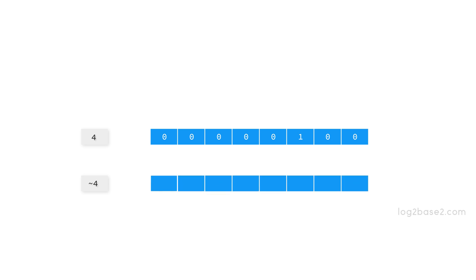Take the first bit — it is zero, so it will become one. Next, take zero, invert it and we get one again. Next is one, it will become zero, and next is zero, it will become one. Similarly, all the remaining zeros will become one, and we get 1 1 1 1 1 0 1 1, which corresponds to the decimal minus five. So the bitwise one's complement of four is minus five.